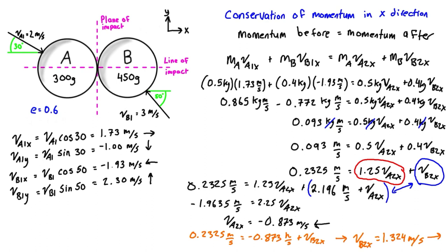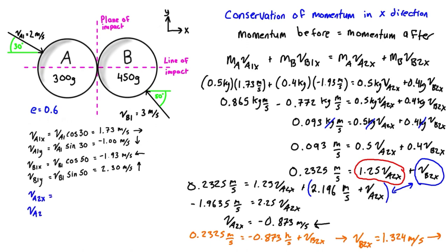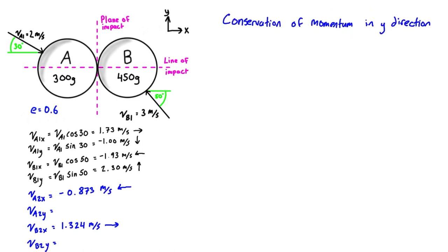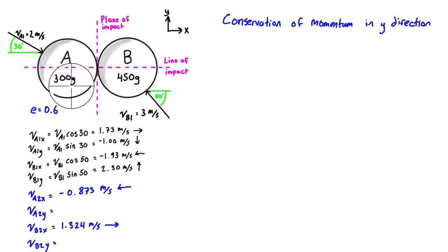Now we need to apply conservation of momentum in the y-direction. We can actually do this on an object-by-object basis because momentum is preserved for each ball individually — there's no impulse acting in the y-direction for either of them. The impact happens along the line of impact, so there's no vertical impulse; all the impulse is along the line of impact. This makes analysis really easy.